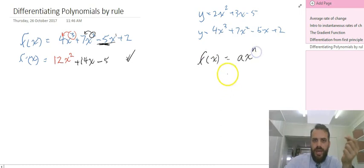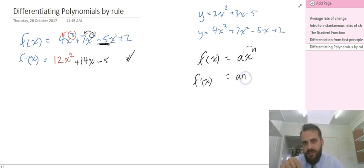Write the rule down: a x to the n, f dash of x equals a times n, x to the n minus 1. There's our basic rule. But you won't need to write down rules, you'll just jump straight into them.